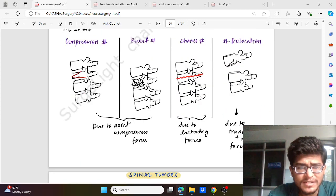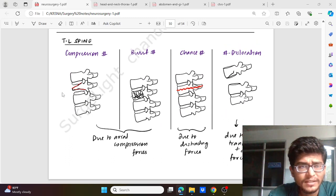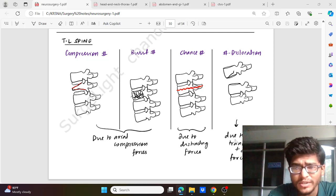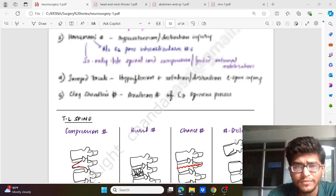Then these are some of the diagrams of the compression fracture and burst fracture which are due to axial compression forces, and Chance fracture due to distracting forces or dislocation due to translation and distracting forces.